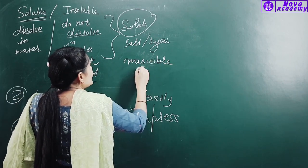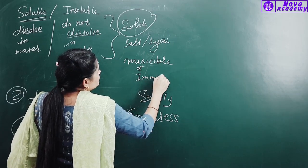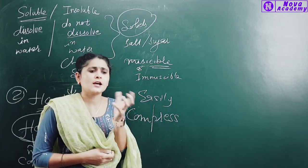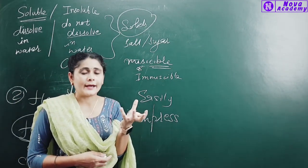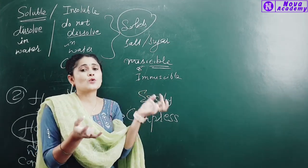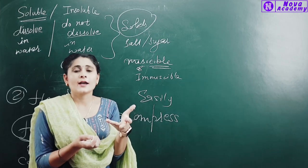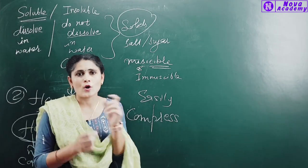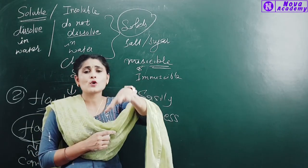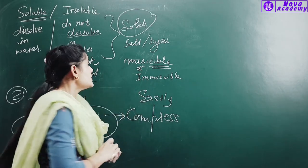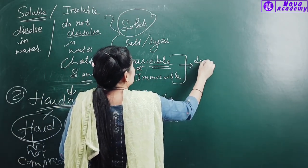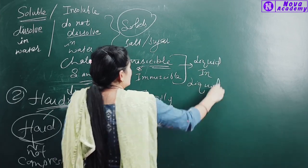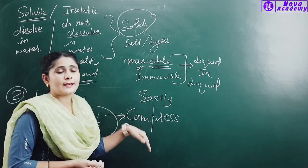We also have the terms miscible and immiscible. These apply to liquids. When you add a liquid like alcohol to water and it mixes completely, it vanishes into the water — that is miscible. When a liquid added to water does not mix but floats on top, that is immiscible. So for liquid in liquid, we use the terms miscible and immiscible.